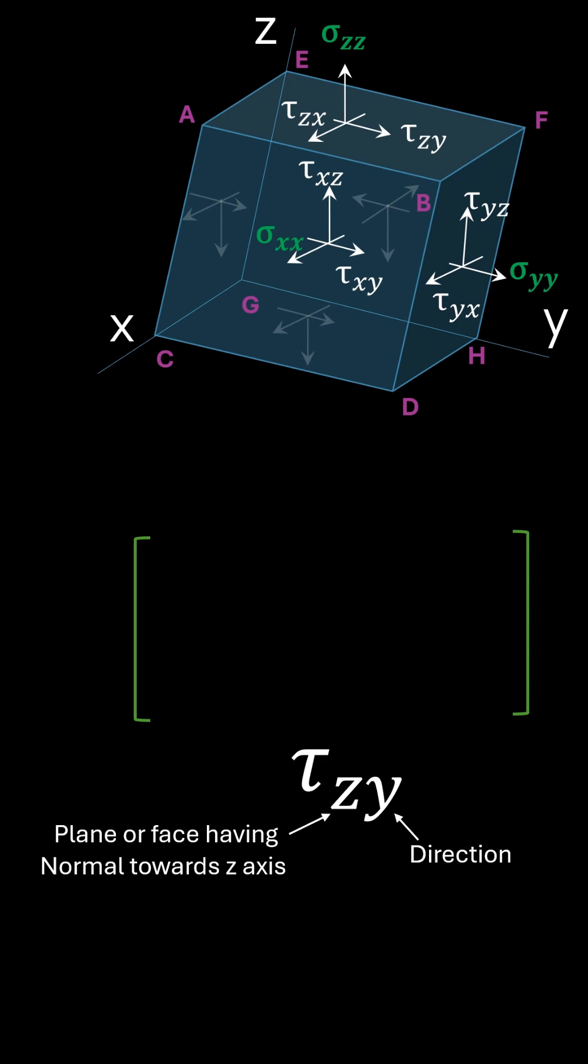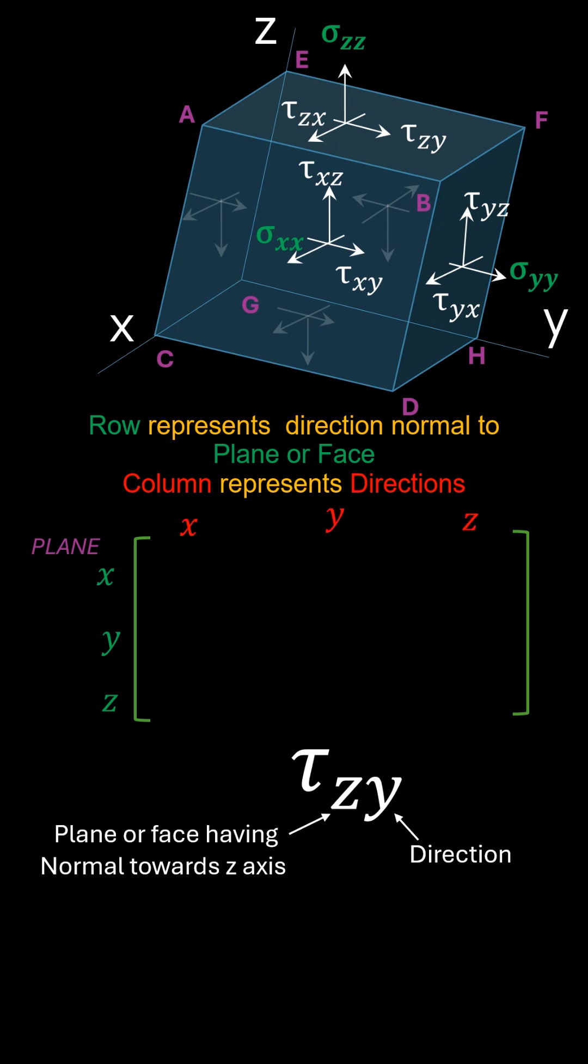The rows of the stress matrix represent the direction of the normal to the plane, while the columns represent the direction of the stress component. For example, normal of plane ABCD points towards the x-direction and then in the first row the stress components with respective directions can be written down. Similarly other components can be written down.